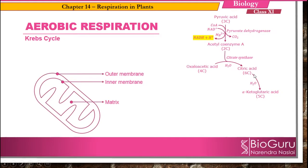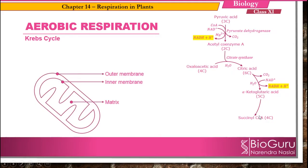During this process, citric acid undergoes oxidative decarboxylation. Citric acid is a six-carbon compound and alpha-ketoglutaric acid is the five-carbon compound, meaning one carbon is removed in the form of carbon dioxide — so decarboxylation takes place — as well as oxidation. During this process, one molecule of NADH is produced by the reduction of NAD+. Further, alpha-ketoglutaric acid gets converted into succinyl CoA, which is a four-carbon compound. The same oxidative decarboxylation takes place; one carbon is removed as CO2 and another NADH molecule is produced.